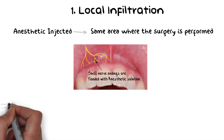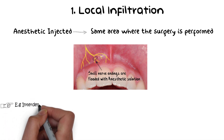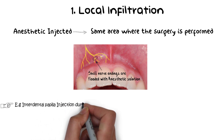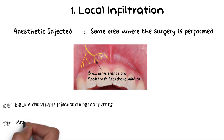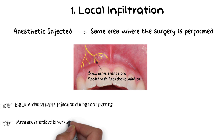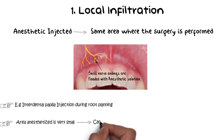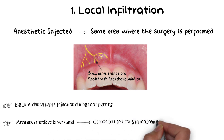An example of local infiltration is administering local anesthetic into the interproximal papilla before performing root planing. However, local infiltration cannot be used for simple or complex surgeries, because the area of tissues anesthetized is very small and adequate pain control is not achieved using this technique.